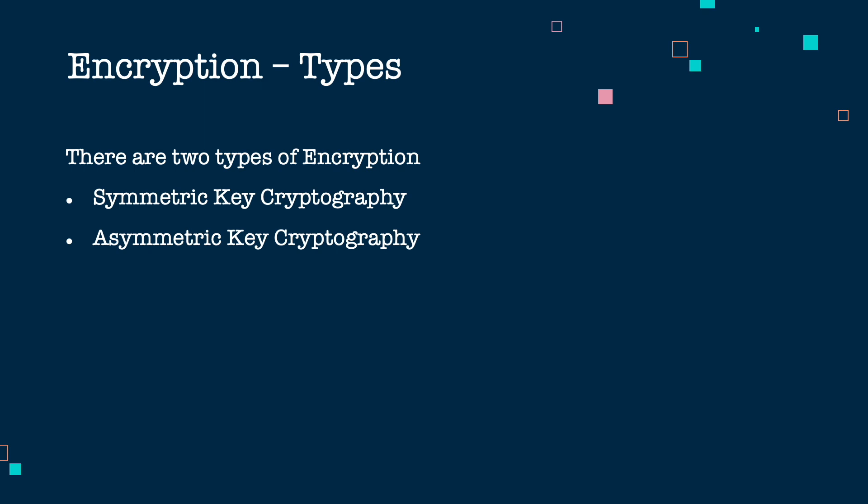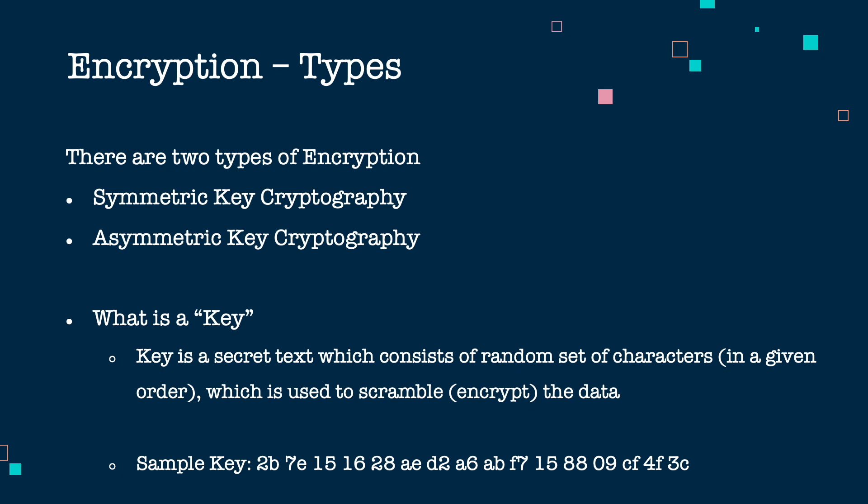Since we are using the word 'key' a lot, let's look at what a key is. A key is a secret text which contains a random set of characters in a specific order. It is very important for encrypting particular data. A sample key looks like a string of characters. There are many components of a key like key length and key format, but simply put, a key is a secret text used to encrypt data.